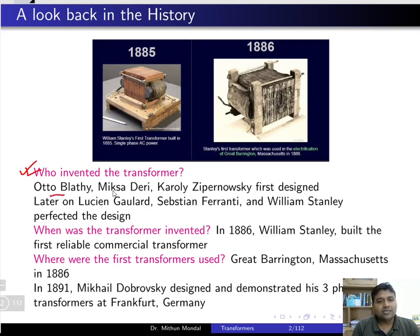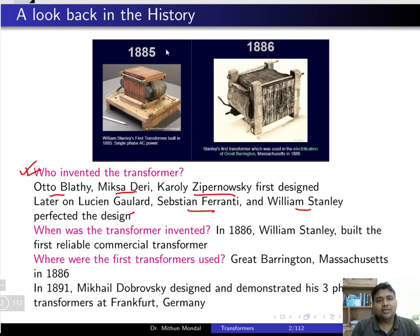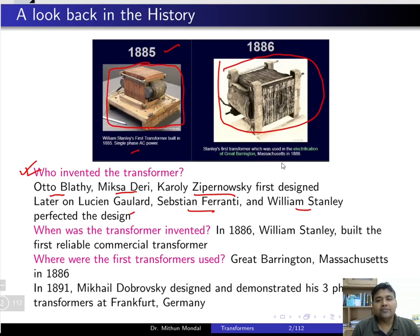The contributions in the invention of the transformer came from many scientists: Otto Blathy, Miksa Deri, Karoly Zipernowsky — they were the first to design it. Later, other researchers perfected the design: Lucien Gaulard, Sebastian Ferranti, and William Stanley. In 1885, William Stanley first built a single phase AC transformer, which was very small in size. In 1886, Stanley's first transformer was used in the electrification of Great Barrington, Massachusetts.